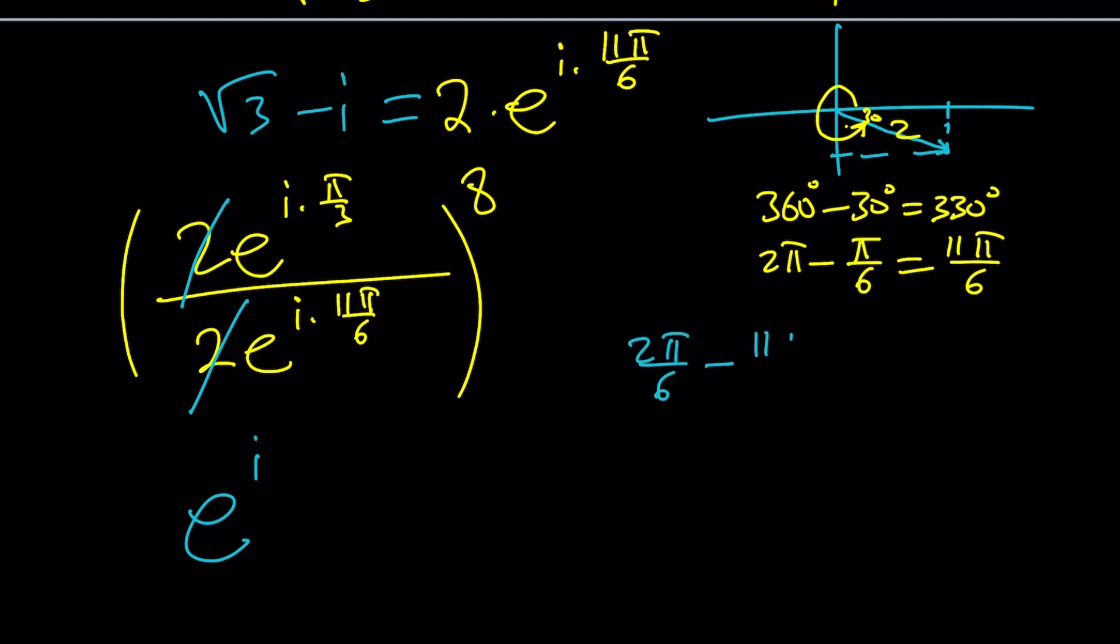The difference is going to be -9π/6, which can be written as -3π/2. But if you just add 2π to it, you're going to notice that it's actually equivalent to π/2.